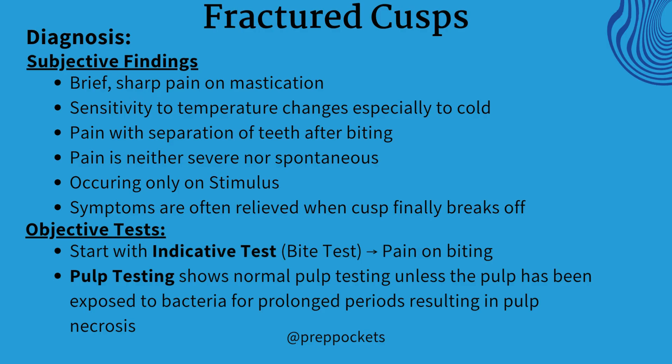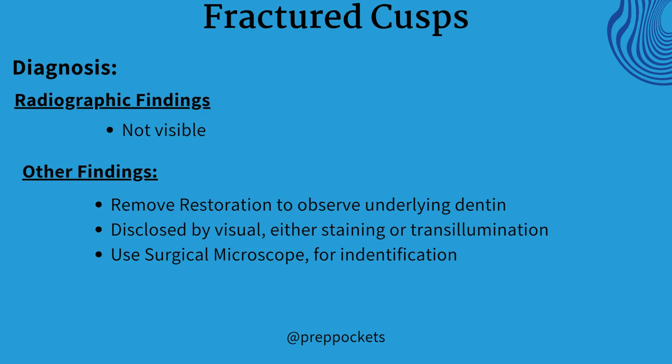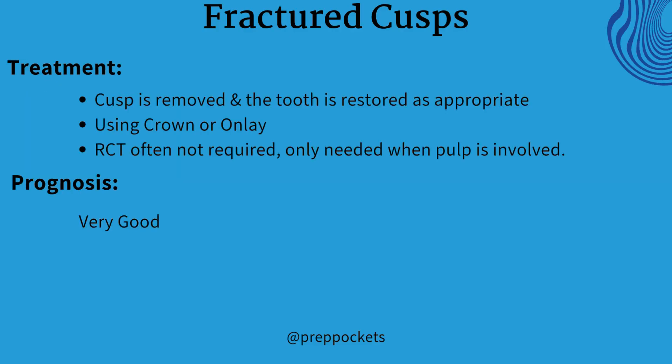For pulp testing, watch the next video on pulp testing. There will be no radiographical findings. If there is already a present restoration, remove the restoration first. You can use a stain or a surgical microscope for identification. Treatment involves the removal of the cusp and restoring the tooth appropriately using full coverage crowns and onlays. Consider doing a pulp procedure if pulp is involved. Fractured cusps show a good prognosis.